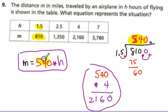So 540 is the number you need to multiply times h to get to miles. I know it works for 1.5 and 810.